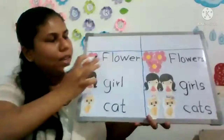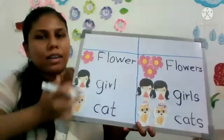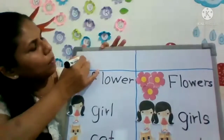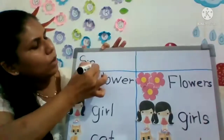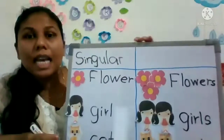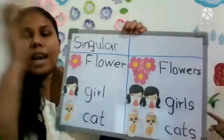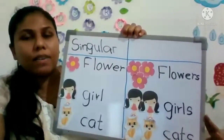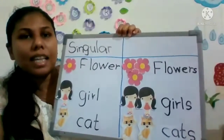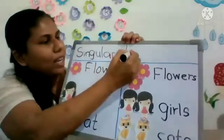Cats, okay. Flower, flowers, girl, girls, cat, cats. Here, only one in this column — we can see nouns, only one, right. One means singular. I can put a singular. How do you say the word? Singular. Yes, singular. And here, more than one — more than one. We call them plural. What's the word? Plural. Yes, say the word — plural. How to spell plural?